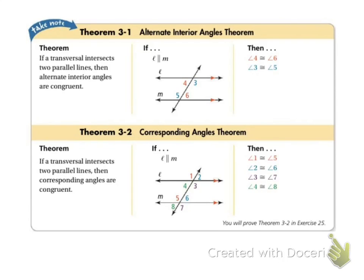Two more theorems — again, don't write the paragraphs. The Alternate Interior Angles Theorem says if two lines are parallel, then the alternate interior angles are congruent. So angles 4 and 6 are congruent, and angles 3 and 5 are congruent. Then we have the Corresponding Angles Theorem, which says if two lines are parallel, then corresponding angles are congruent. So angles 2 and 6 are congruent, and angles 3 and 7 are congruent.